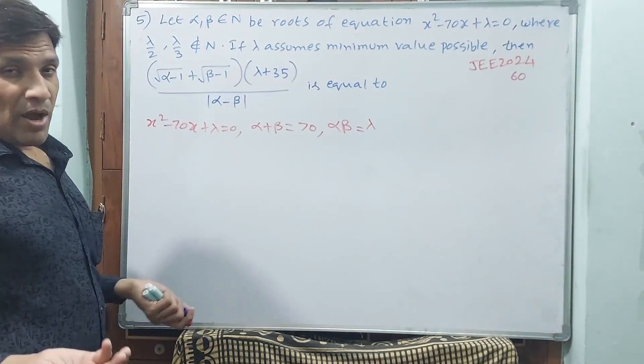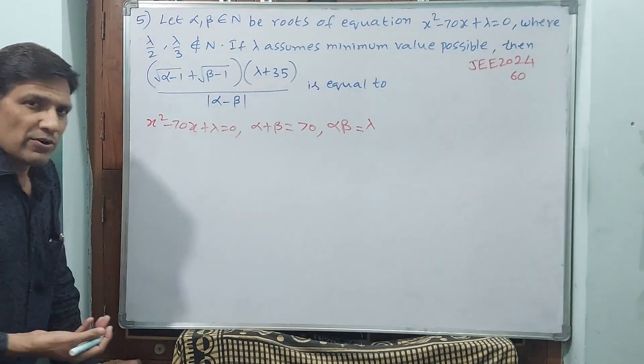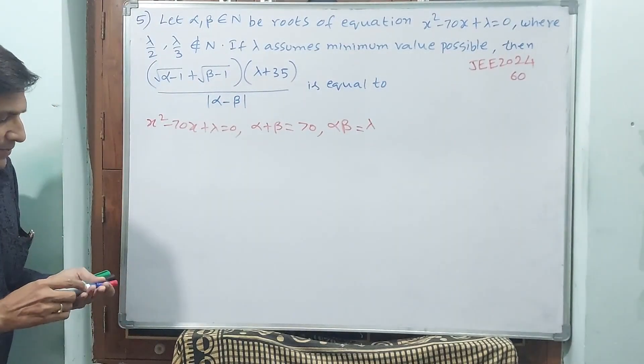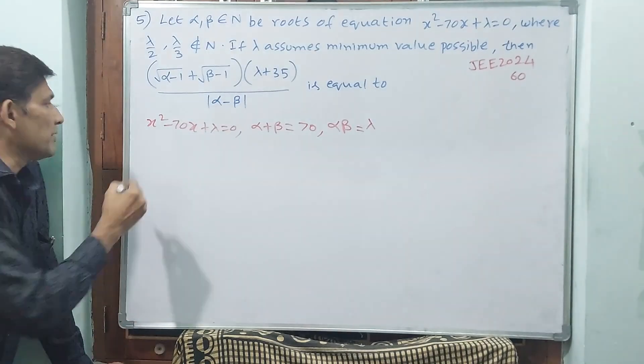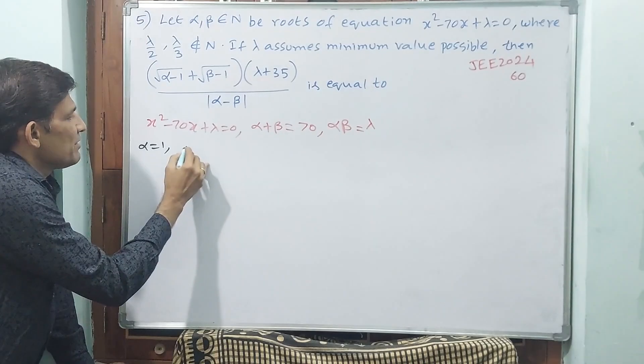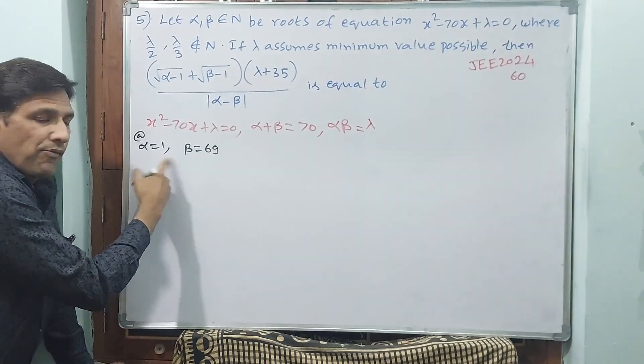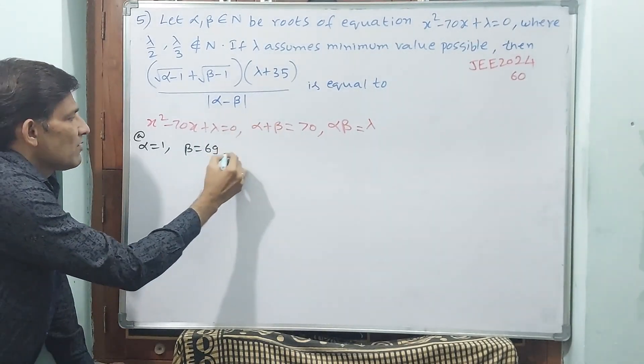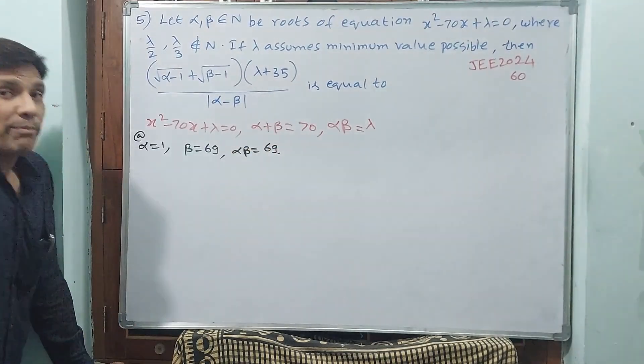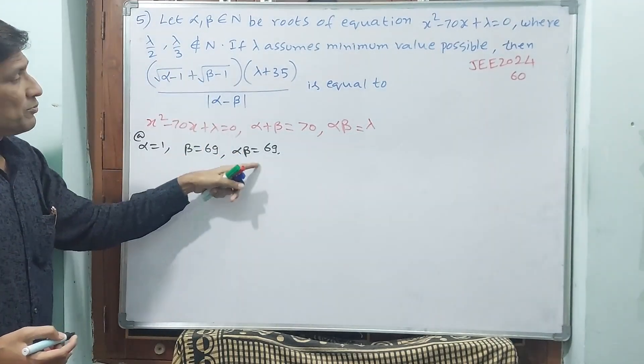See here, what we can say. Some options are there. These are natural numbers, meaning you have to start from 1 only. Let us start with α = 1. See one hint I am giving here. If α = 1, automatically α + β = 70 means β should be 69. Then what about αβ? 69 × 1 = 69. But this is divisible by 3.